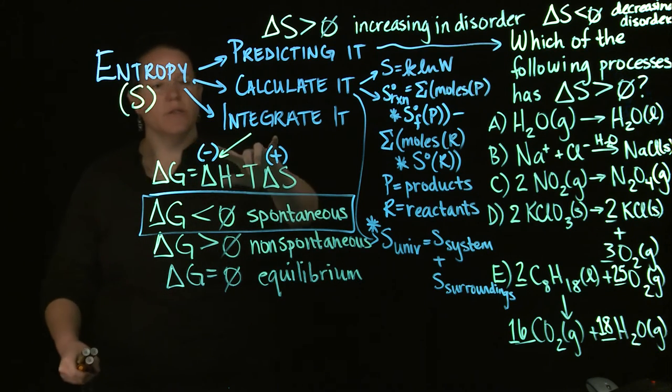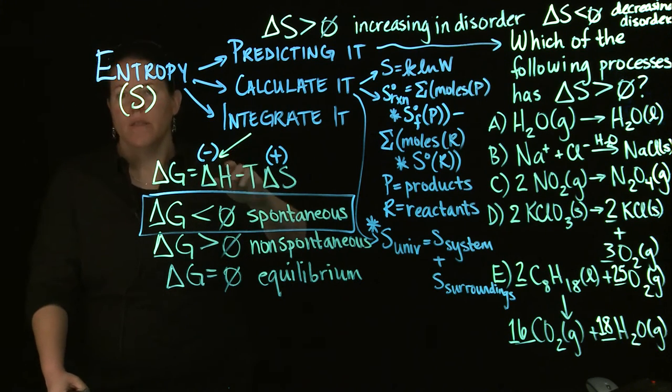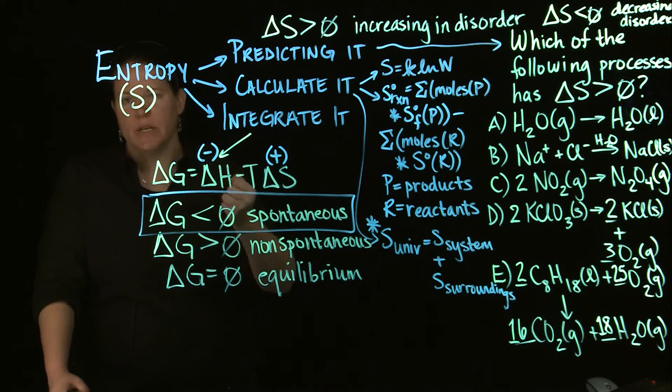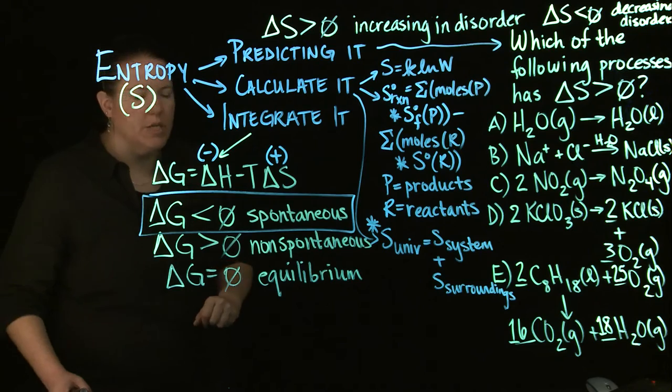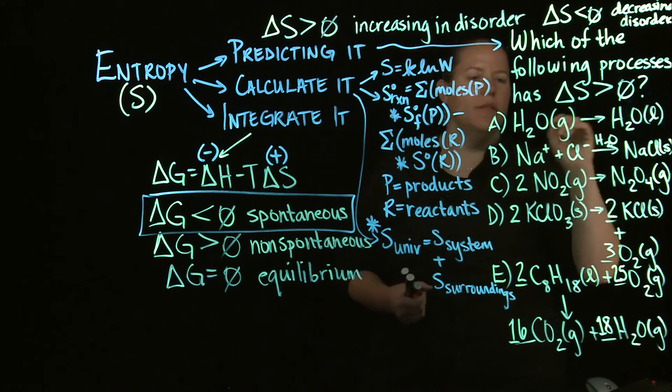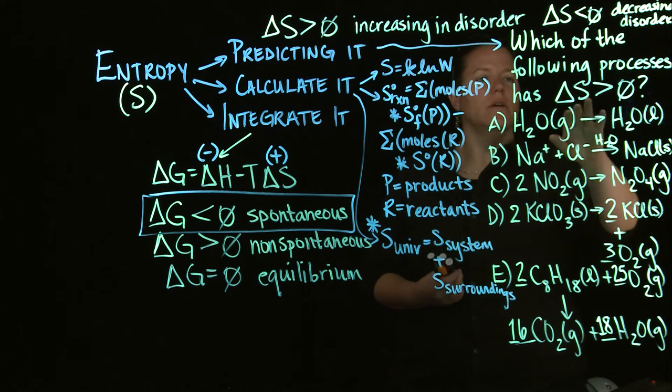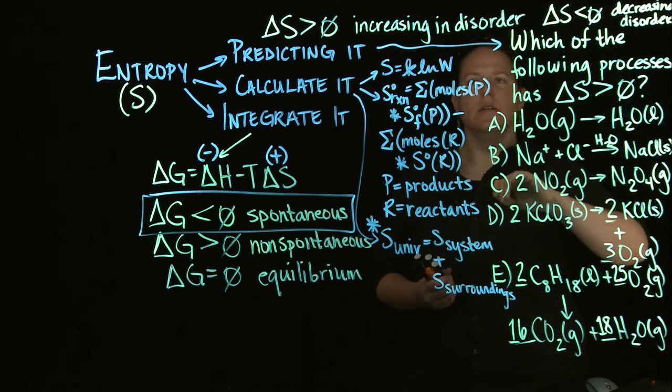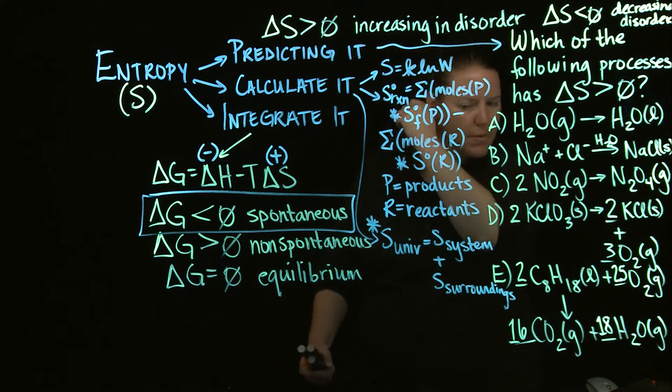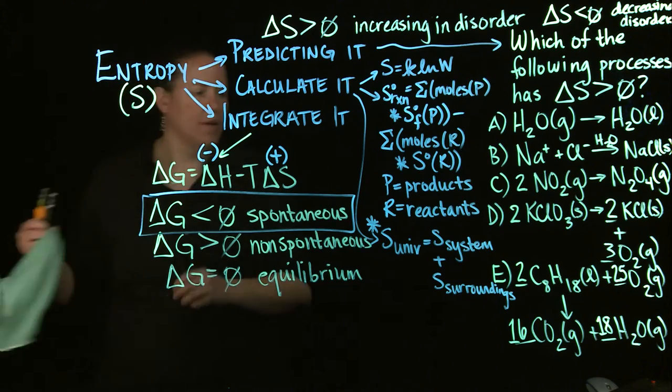If H and S are the same sign, then my reaction becomes very temperature dependent. If they are opposite signs, then my reaction becomes temperature independent. So let's talk about these. I want a process in which S is greater than zero, so that means it's increasing in disorder. Let's talk about what that looks like.